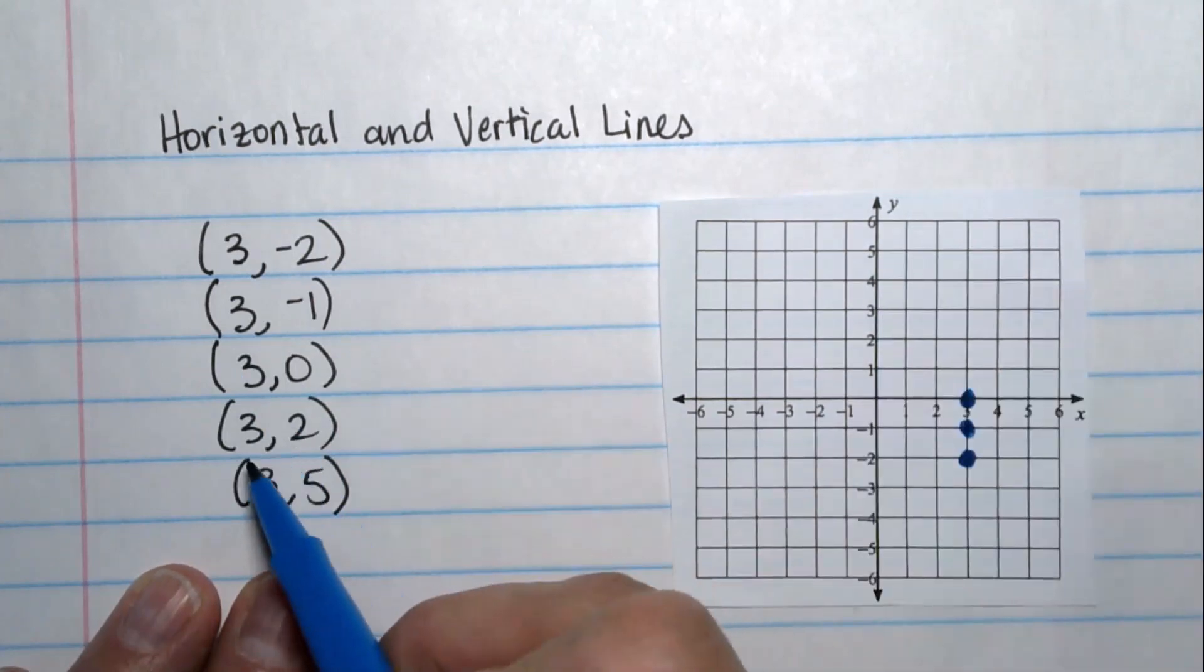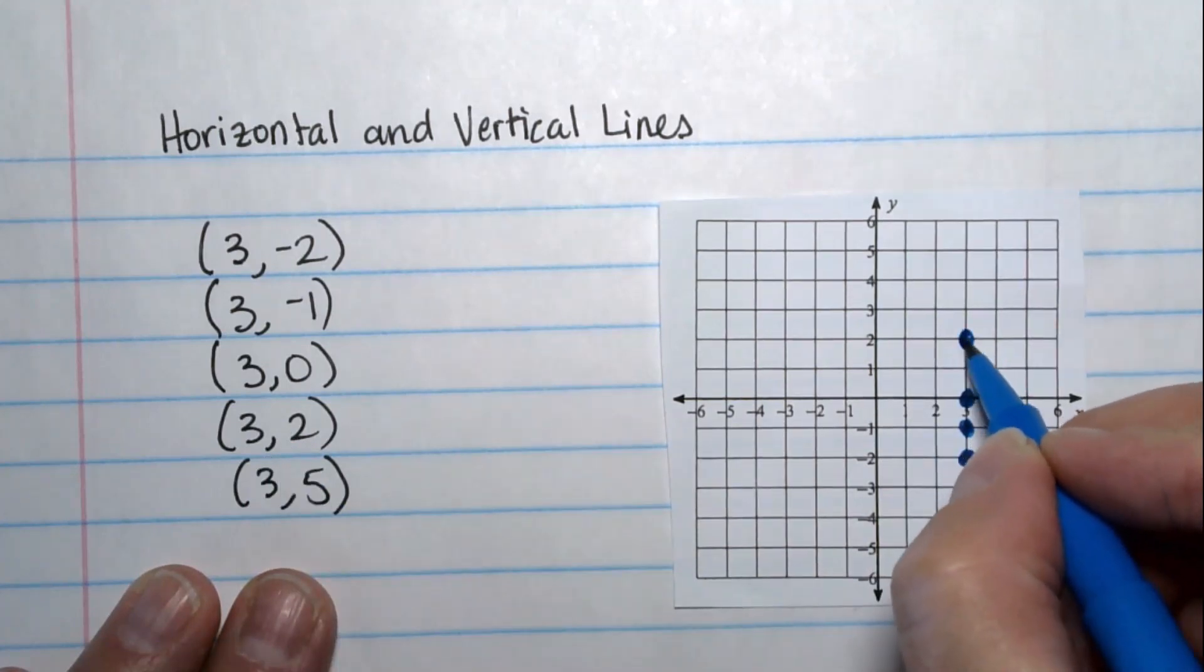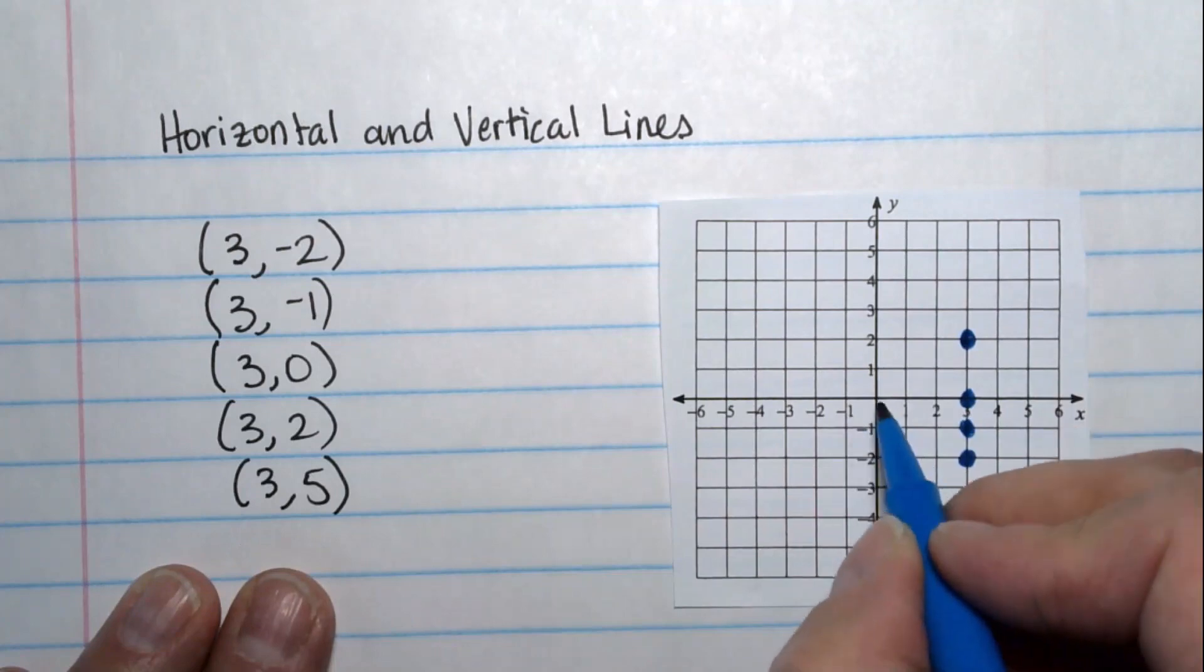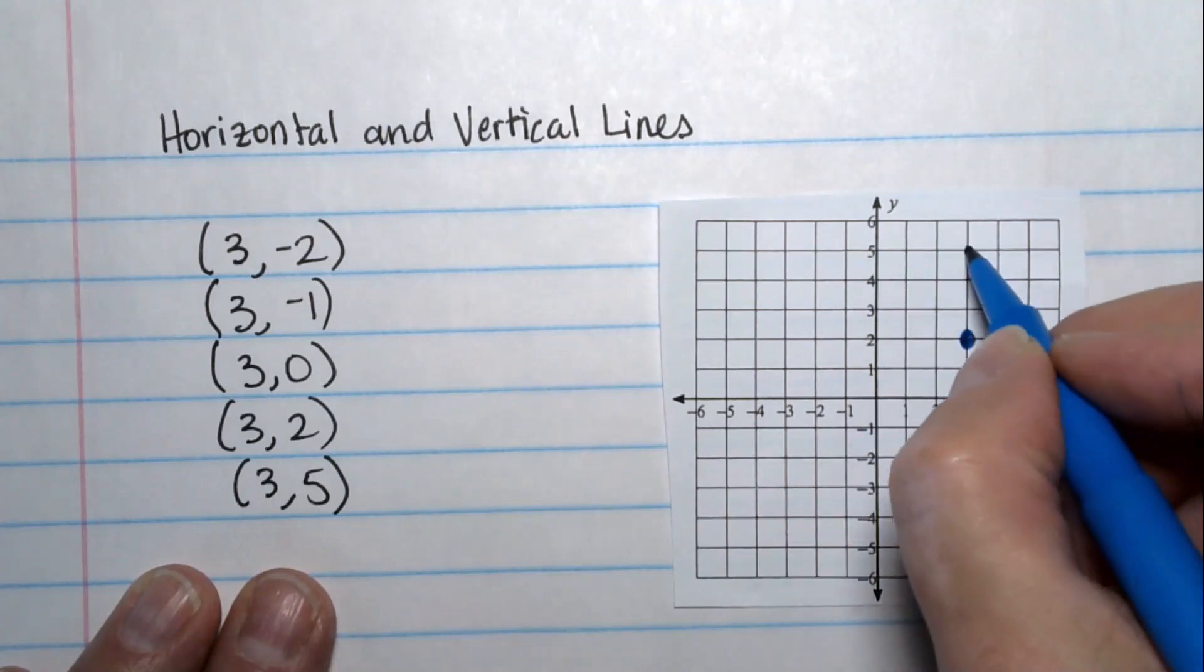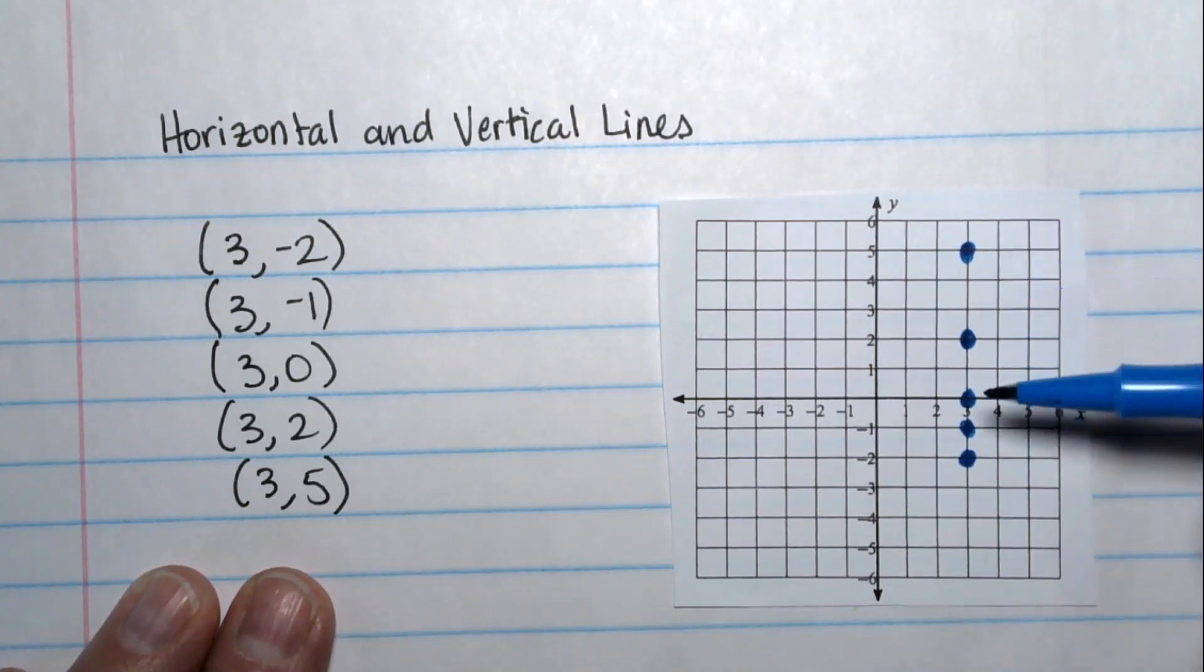3, 2, over 3, up 2. There's no reason I have to go in order. I can skip around a little bit and 3, 5. When I graph those points, they make a vertical line.